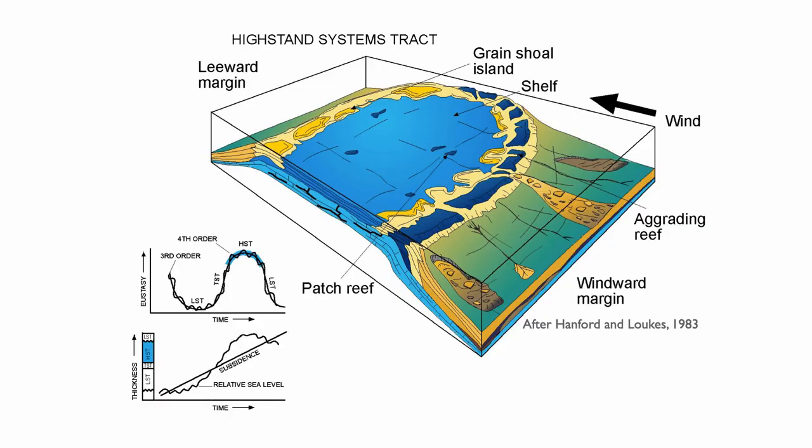During the high stand tract, we have the majority of sedimentation on those platforms — no exception with isolated platforms. The asymmetry that developed during the TST becomes even stronger. We have more grain shoals on the leeward side and much better developed reef on the windward side.